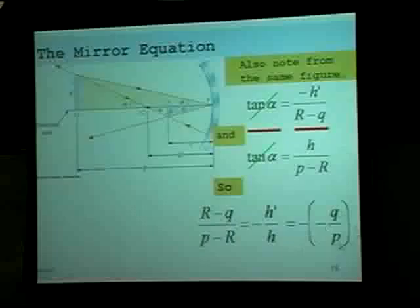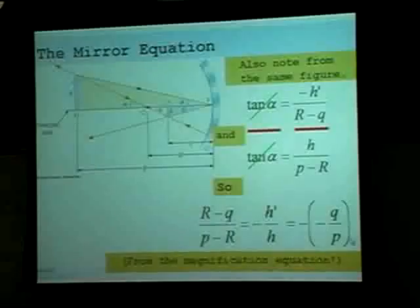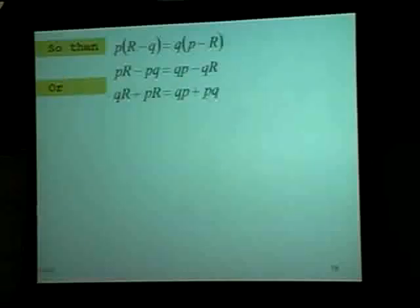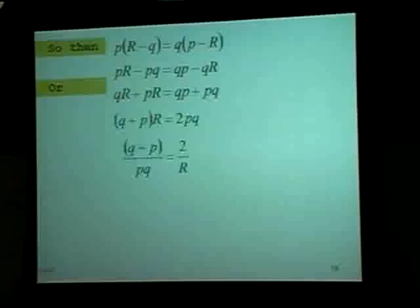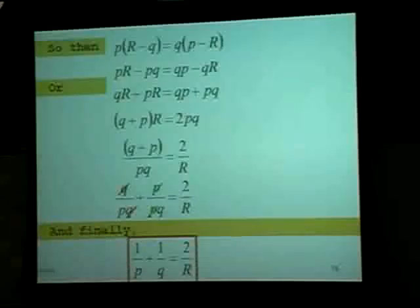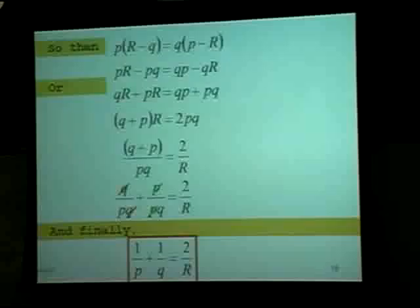From the previous magnification equation, that equals negative Q over P. With a bit of algebra — p times r minus q equals q times p minus r — we can get qr plus pr equals 2pq, and factoring out r, we arrive at: 1 over P plus 1 over Q equals 2 over R. That's 1 over the object distance plus 1 over the image distance equals 2 over the radius of curvature. We call that the mirror equation.